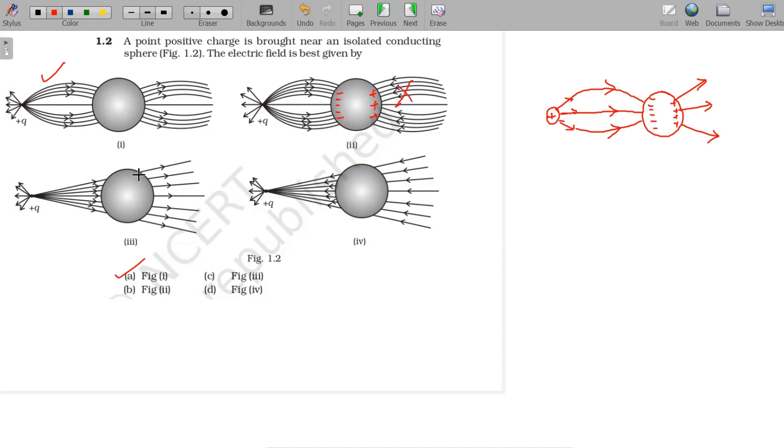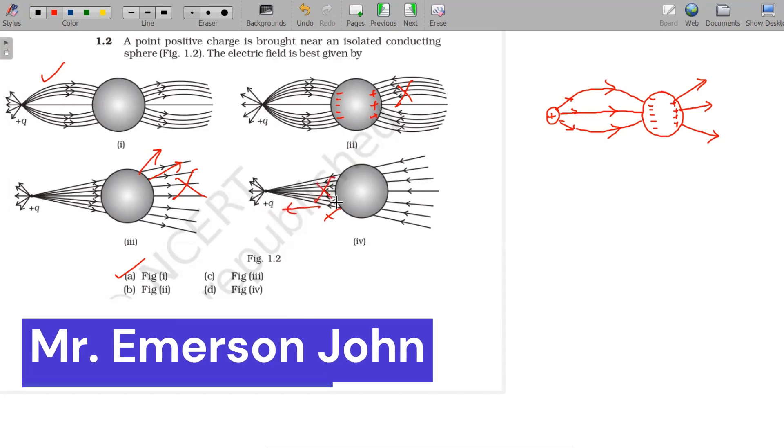On the other pole, the direction is perpendicular to the surface, so this is also wrong. And this is also completely wrong because electric field won't pass towards the positive charge. So first one is right. Thank you.